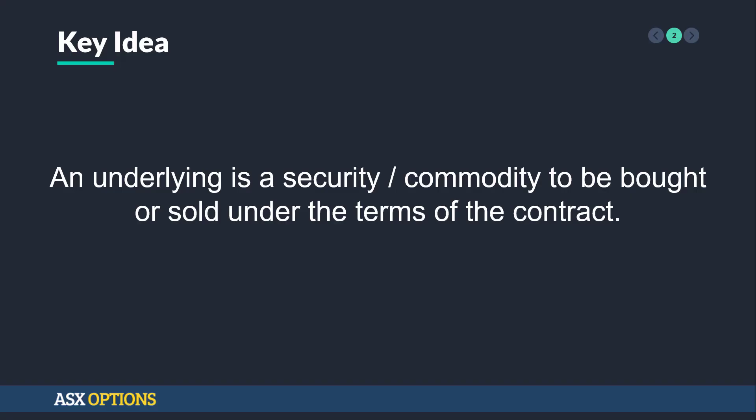The key idea is that an underlying is a security or commodity to be bought or sold under the terms of the contract. That's a little bit wafty, but essentially what it means is that you have a contract, and whatever the contract is concerning is what's called the underlying.